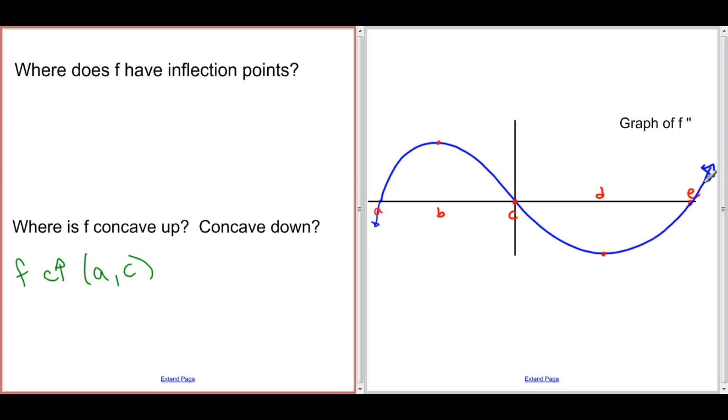It's also positive to the right of e. So from e to infinity, this graph is positive over here, and that is f double prime.